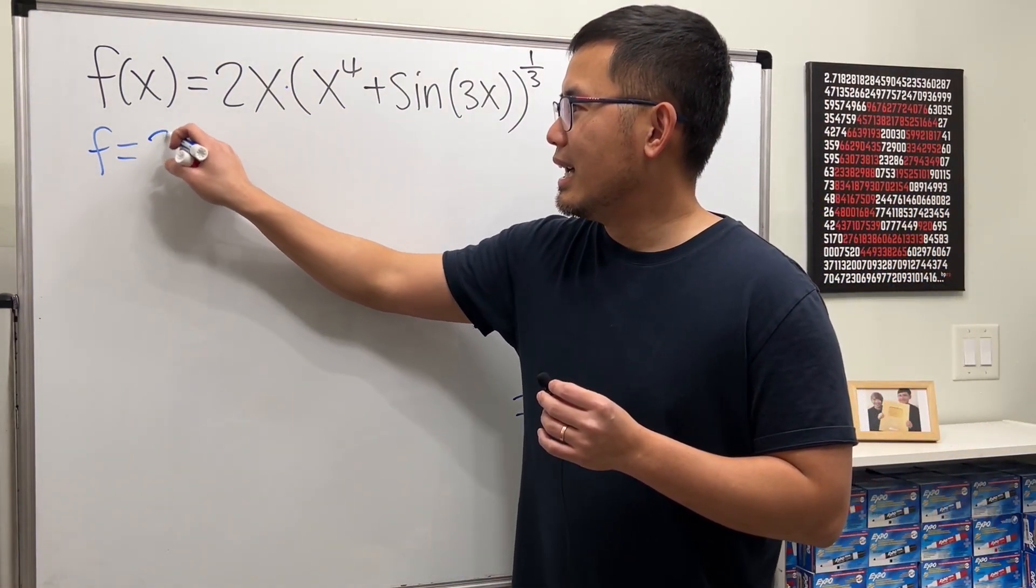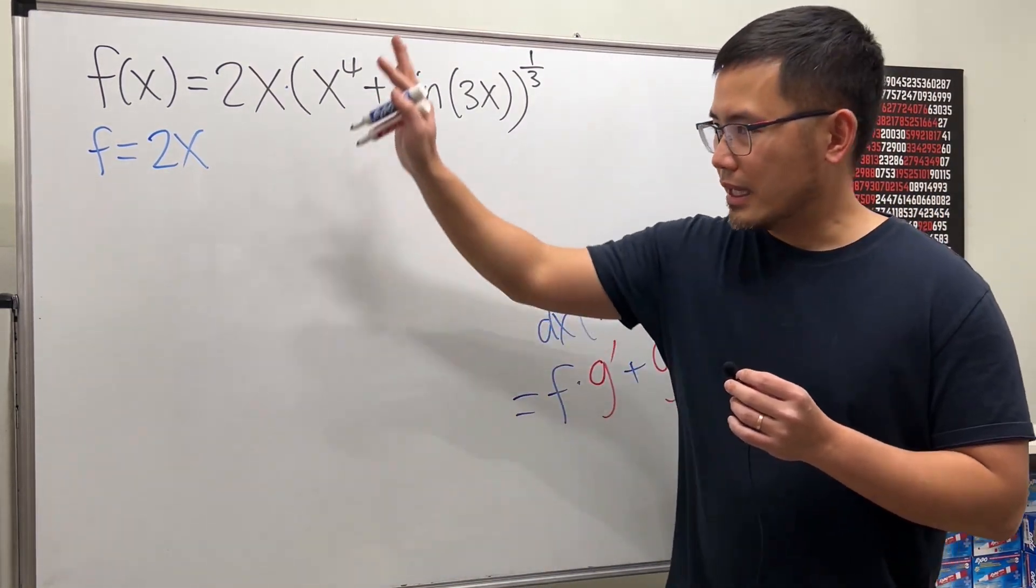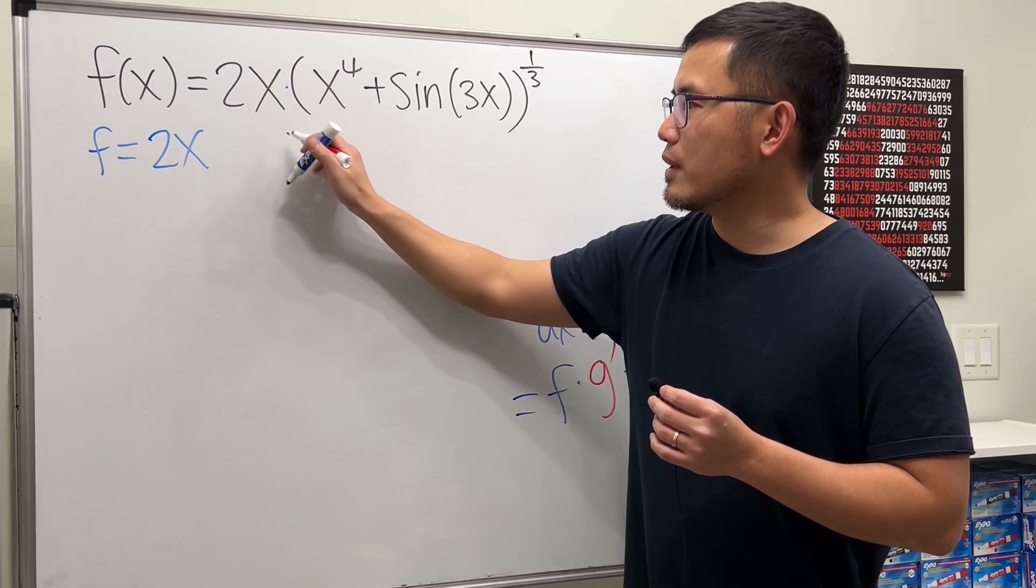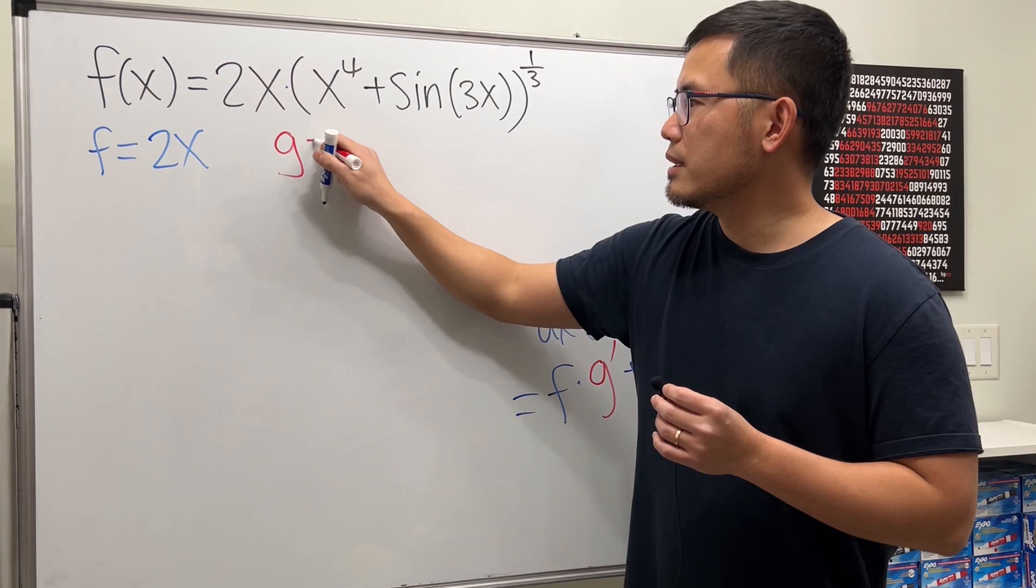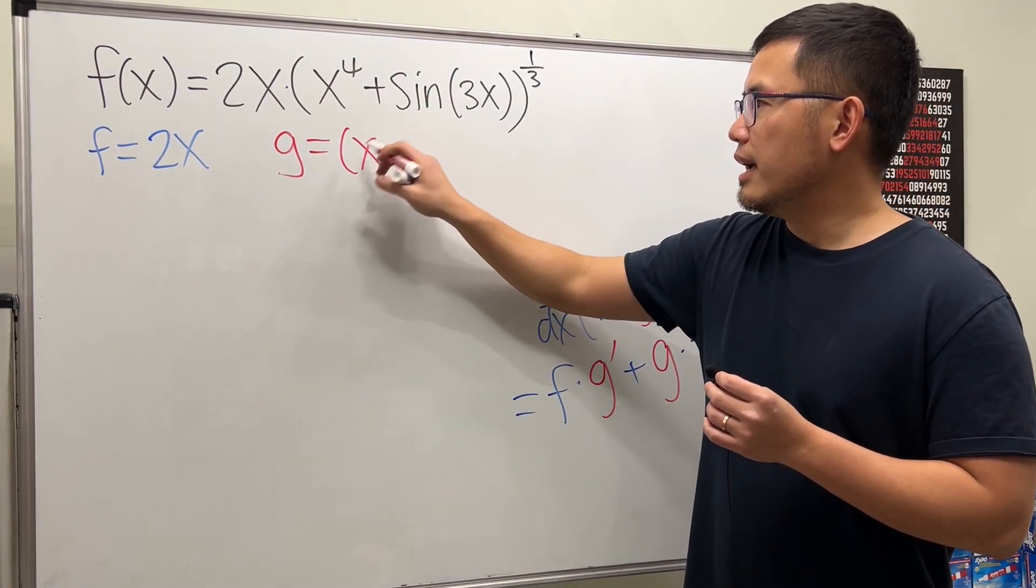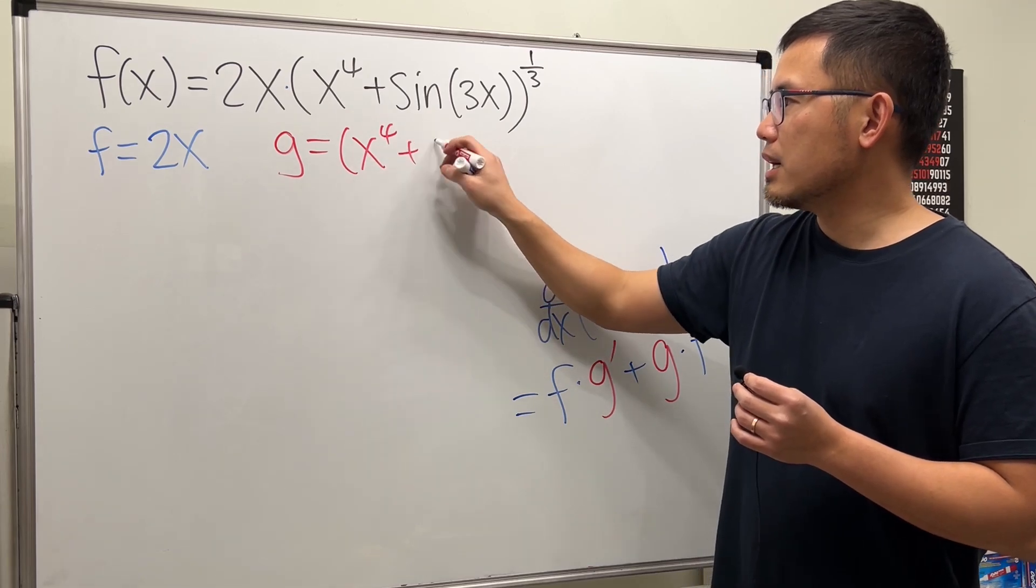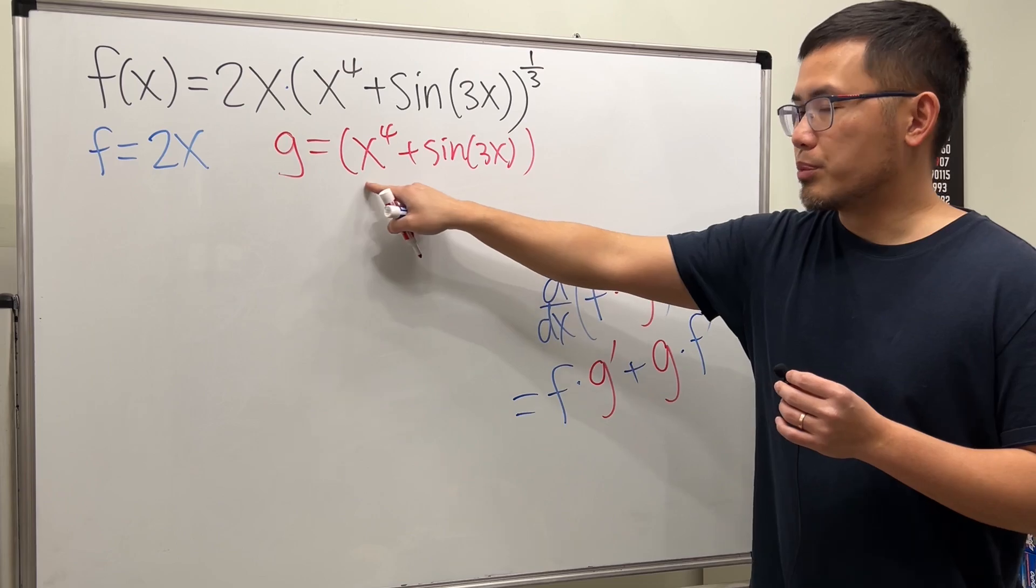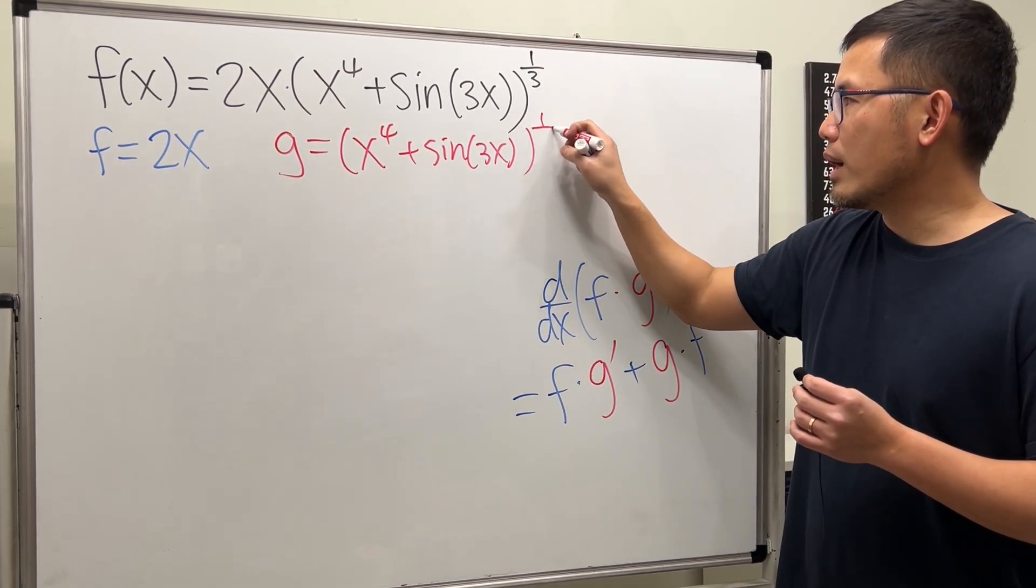So here, 2x, that's the first function. And then the second function is the g function. I will put this down right here, which is all that. And then I will just write this down again. x to the fourth in the parentheses and then plus sine of 3x. All these are in the parentheses, and then we have that one third power.